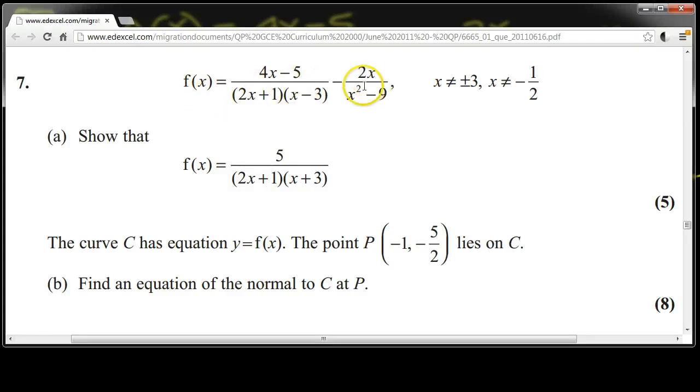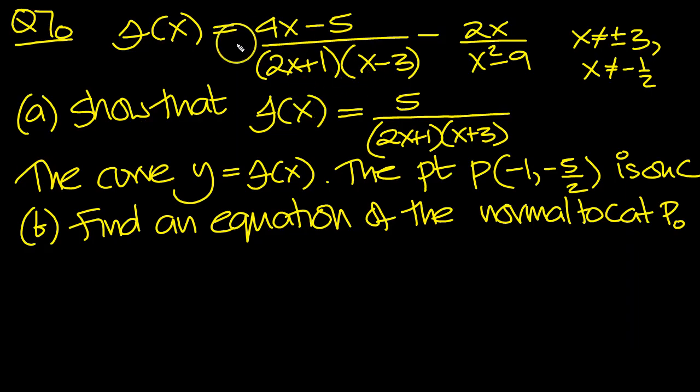f of x equals this function here. Show that f of x equals this in simplified form. The curve C has equation y equals f of x. The point P, minus 1, minus 5 over 2, lies on C. Find an equation of the normal to C at P. So I've got the equation here. Let's have this first part then, part A.